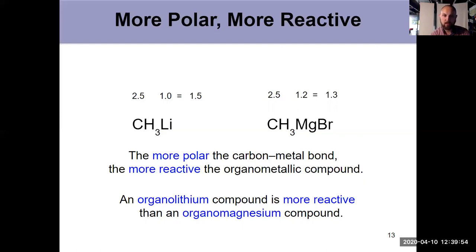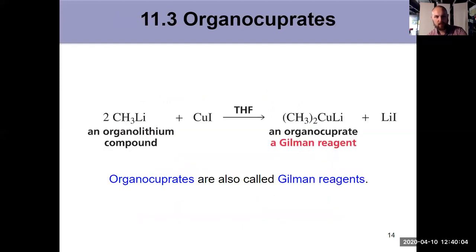Organolithiums with a difference of 1.5 are more reactive than Grignards with a difference of 1.3. More polar bond, more reactive. We're going to keep transmetallations in mind when we go next and talk about a different organometallic where we start introducing transition metals in 11.3, which discusses organocuprates.